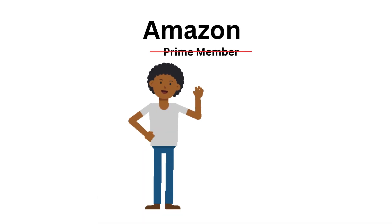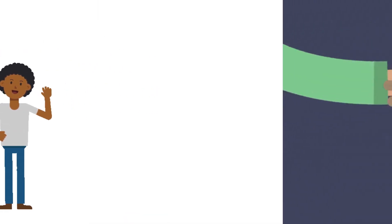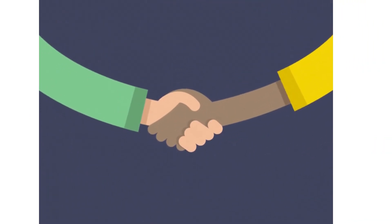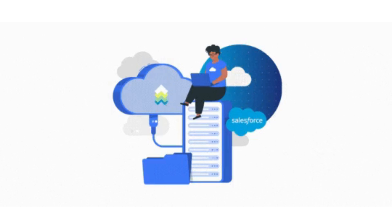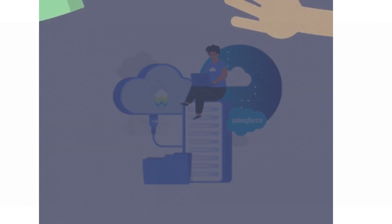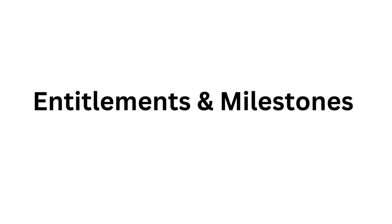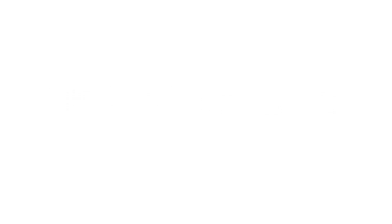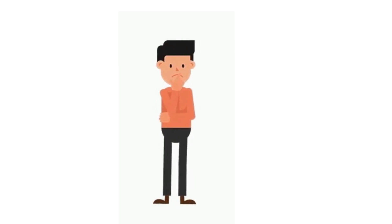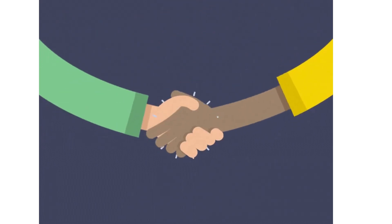Whereas when you are not a Prime member, there is no such service-level agreement between you and Amazon. As Salesforce is a CRM, it needs to have a way to maintain this service-level agreement, and that's where the use of Entitlements and Milestones comes into the picture. Entitlements and Milestones are basically used to create and maintain such service-level agreements for smooth functioning.